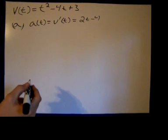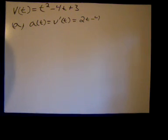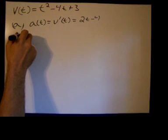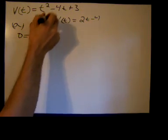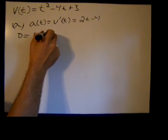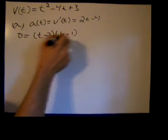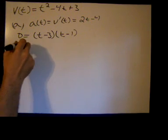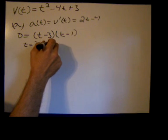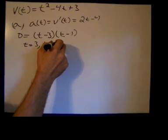And we want to know what the acceleration is each time velocity is equal to zero. So we're going to take the velocity function and set it equal to zero. And I'm going to factor it. That factors into t minus 3 times t minus 1. And we get t is equal to 3 and t is equal to 1.